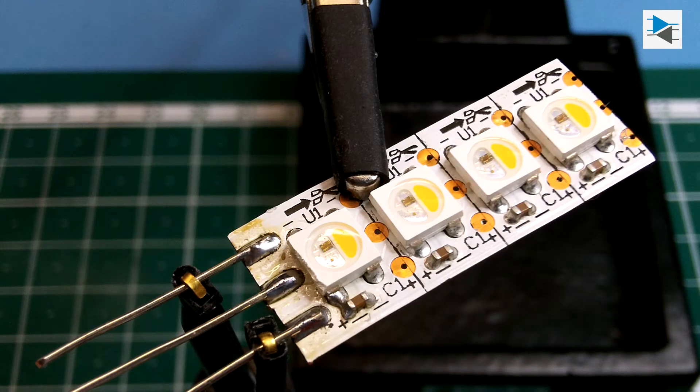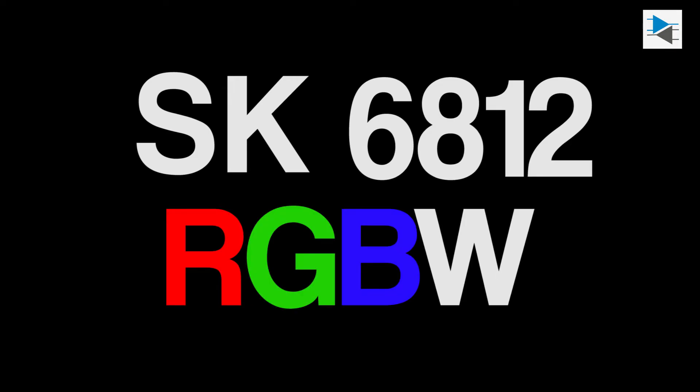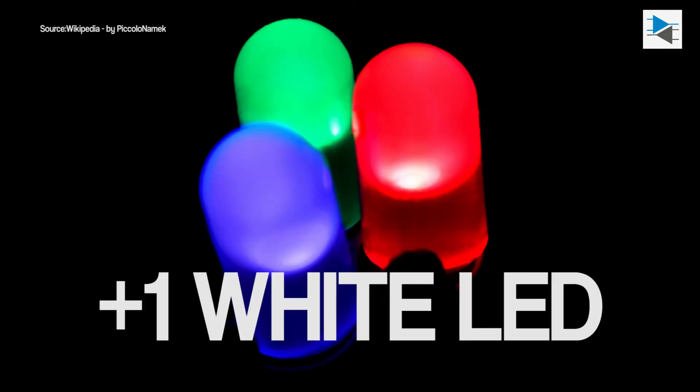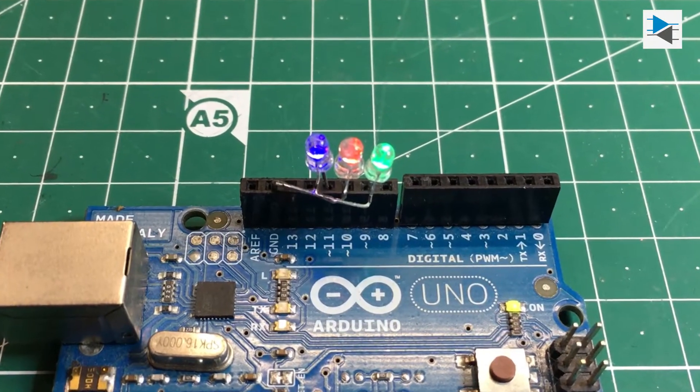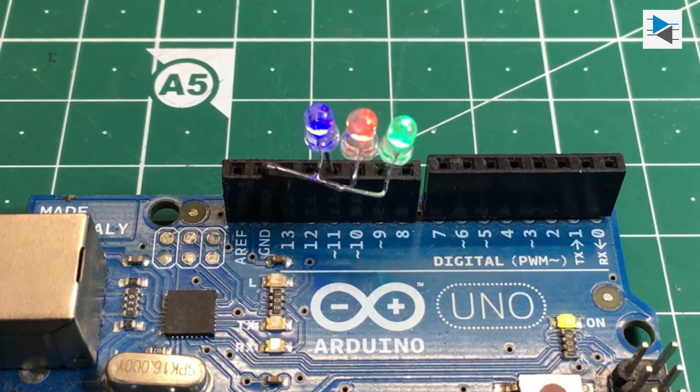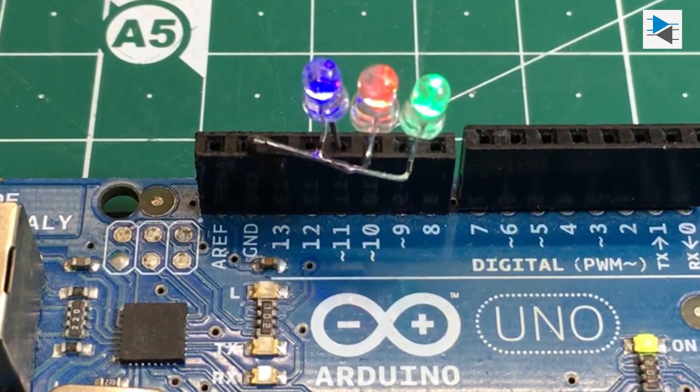These LEDs are the SK6812 RGBW and each one of them is composed of three LEDs plus a microcontroller. So our equivalent circuit with an added white LED could look something like this.